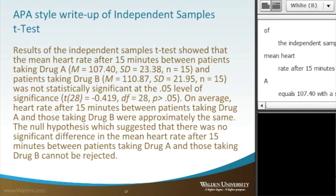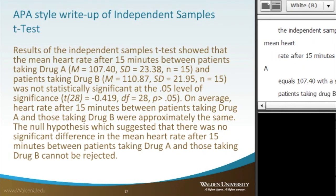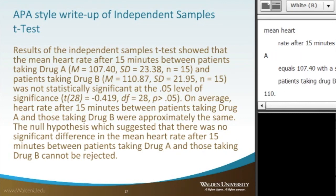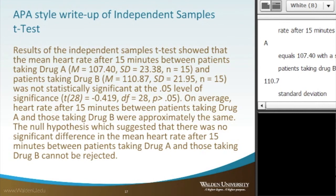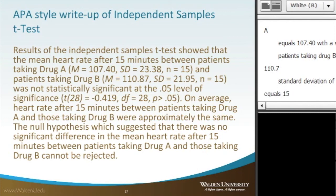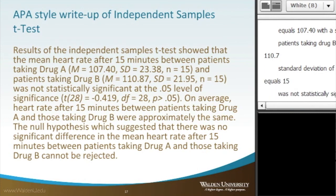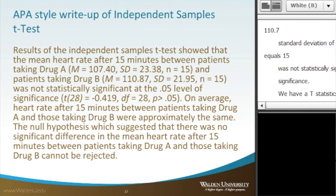and patients taking drug B, where the mean value is 110.87, with a standard deviation of 21.95, with a sample size of n equals 15, was not statistically significant at the .05 level of significance. We have a t-statistic of 28 equaling negative 0.419, degrees of freedom equal to 28, and the p-value is greater than .05.